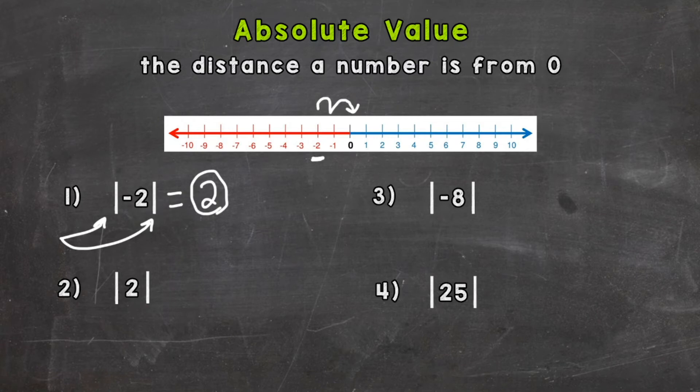Now let's take a look at number two. We have a positive two, which is right here. How far away is that from zero? Well, you guessed it, two, right? One, two. Two jumps just like negative two. So the absolute value of positive two is also two.